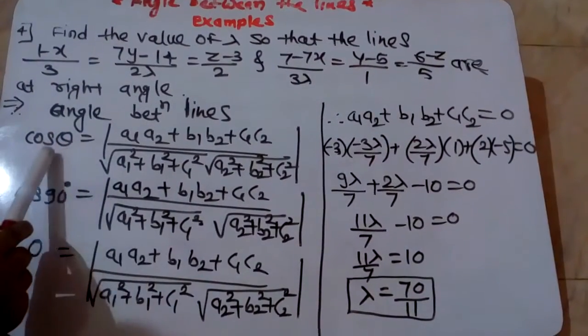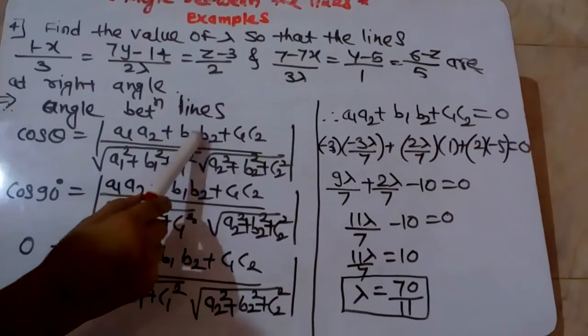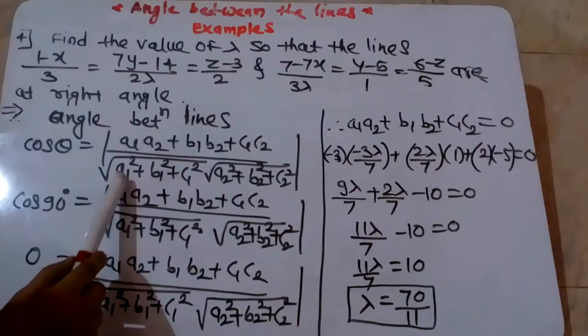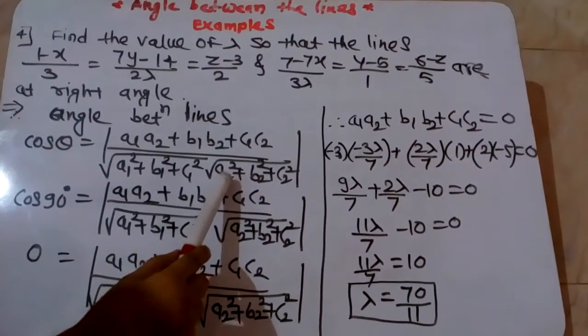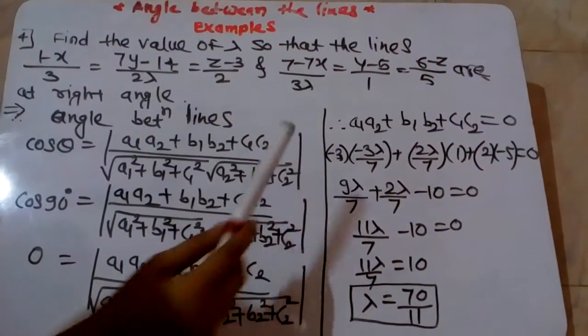Now we write the formula for angle: cos θ = (a₁a₂ + b₁b₂ + c₁c₂) / [√(a₁² + b₁² + c₁²) × √(a₂² + b₂² + c₂²)].